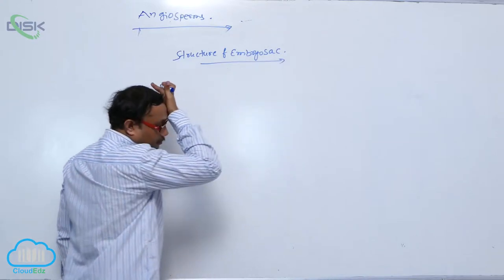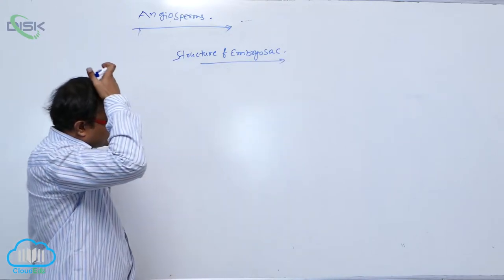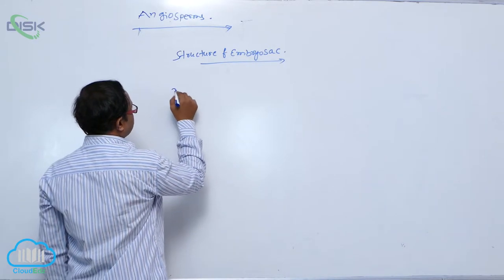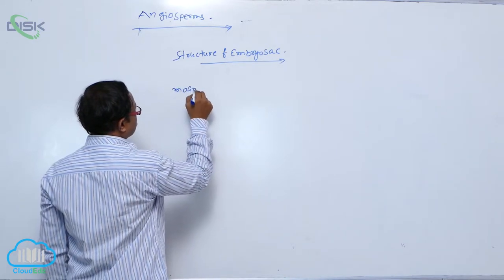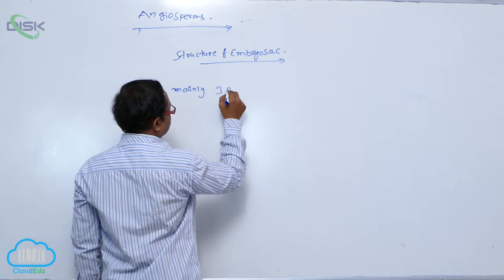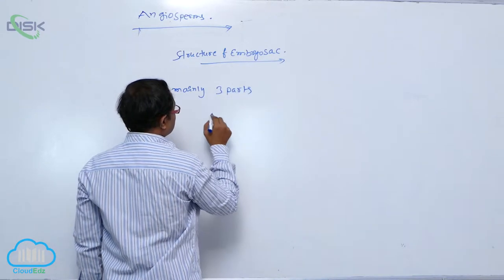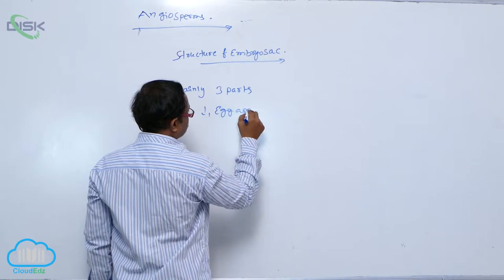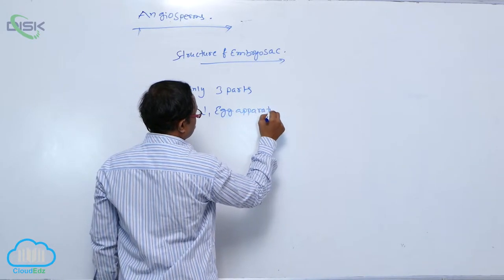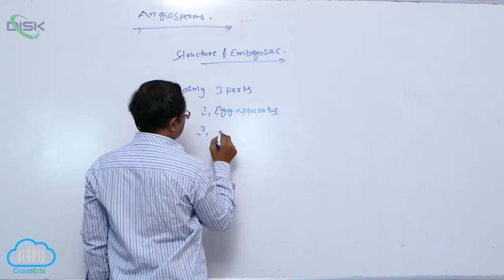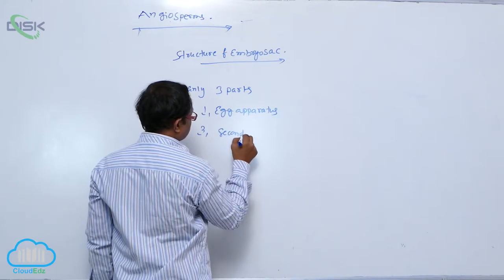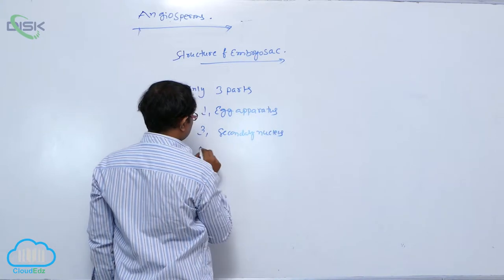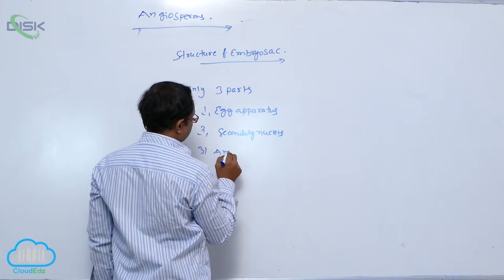The structure of embryo sac. In the structure of embryo sac, it is mainly three parts. First one is the egg apparatus. Second one is the secondary nucleus. Third one is the antipodal cells.